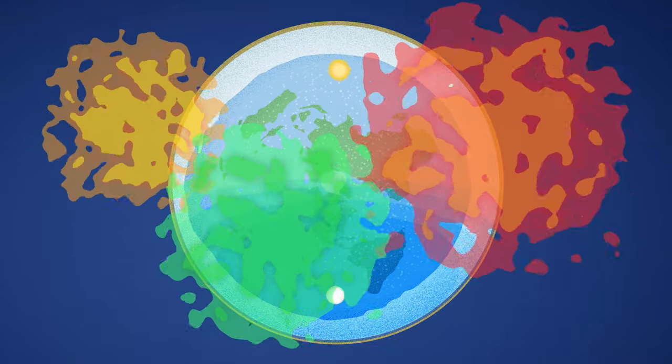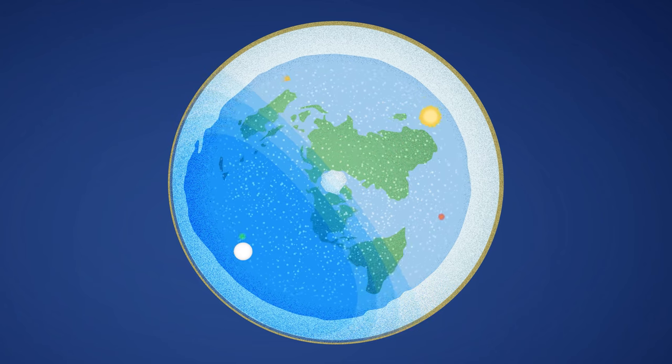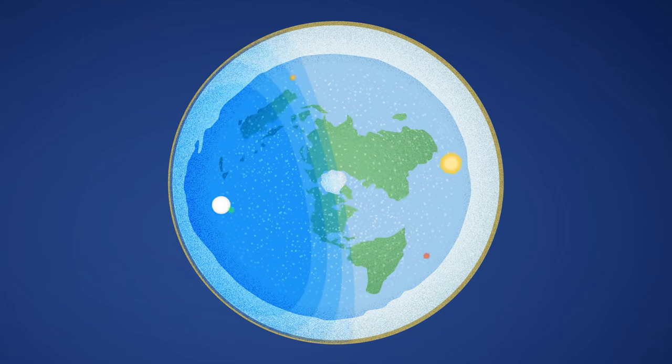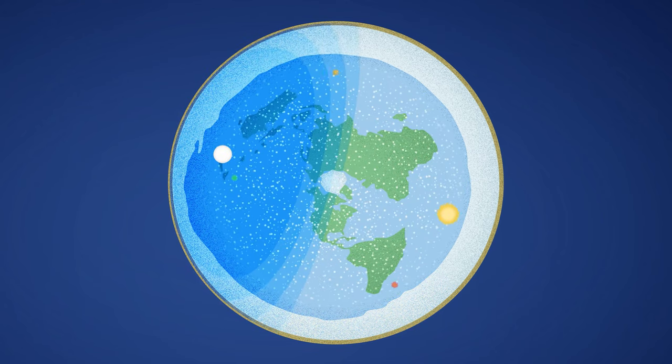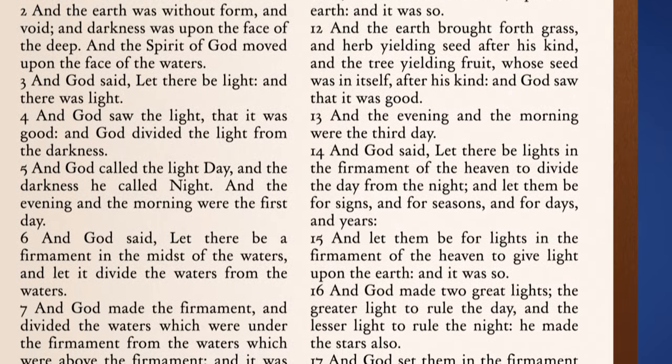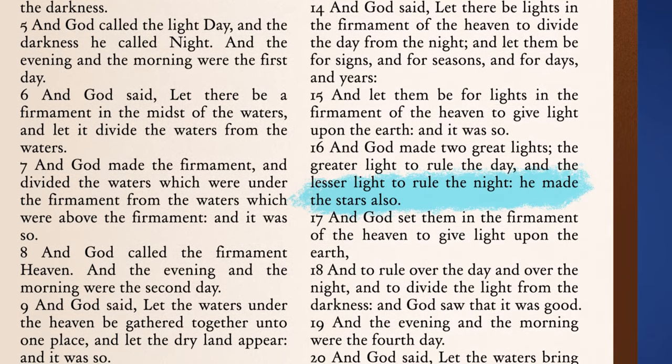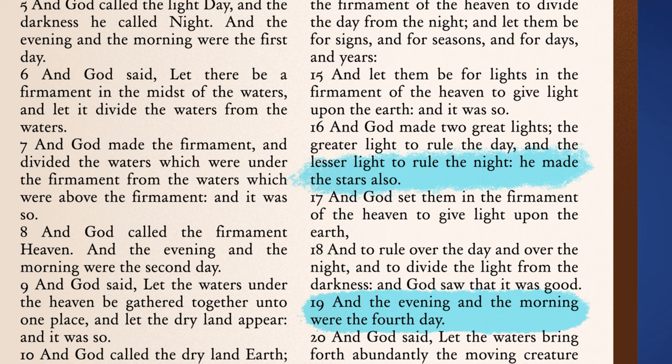What are called planets are simply wandering stars. These luminaries traverse the heavens irregularly, wandering in retrograde motions above the earth. Not being mentioned specifically during creation week, the wandering stars fall under the general category of stars, which God made on the fourth day.